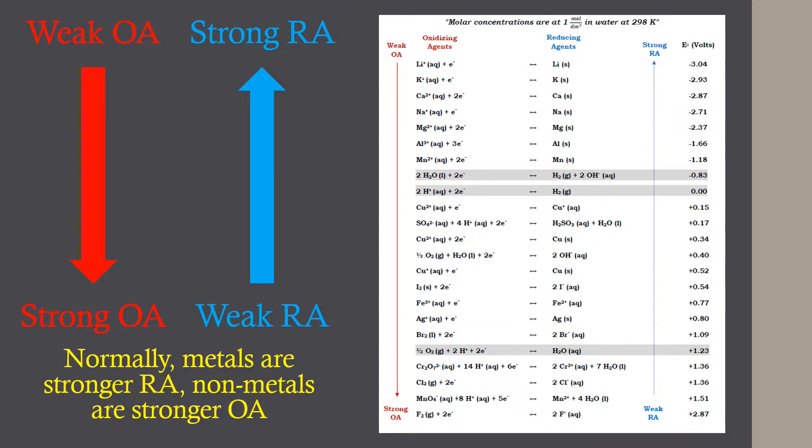As a side note, for the most part, metals that are solids are generally stronger reducing agents, such as lithium, calcium, and sodium, while nonmetals like fluorine, chlorine, and bromine are generally stronger oxidizing agents.